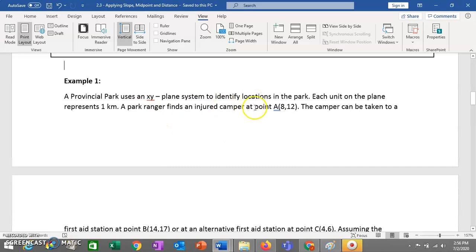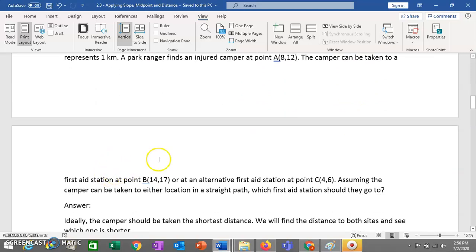A park ranger finds an injured camper at point A, which has the coordinates (8, 12). The camper can be taken to a first aid station at point B, which will be (14, 17), or an alternative first aid station at point C, which will be (4, 6). So assuming you can take them to either location and it's a straight line and it's about equal difficulty to go from one to one or the other, which first aid station should they go to?